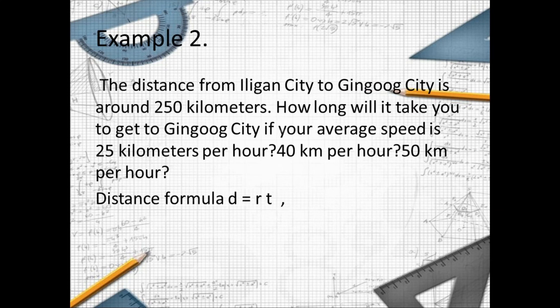Example number 2: The distance from Iligan City to Cagayan de Oro City is around 250 kilometers. How long will it take to get there if your average speed is 25 kilometers per hour, 40 kilometers per hour, or 50 kilometers per hour? The formula for distance is D equals rate times time, so time T equals distance over rate or speed.